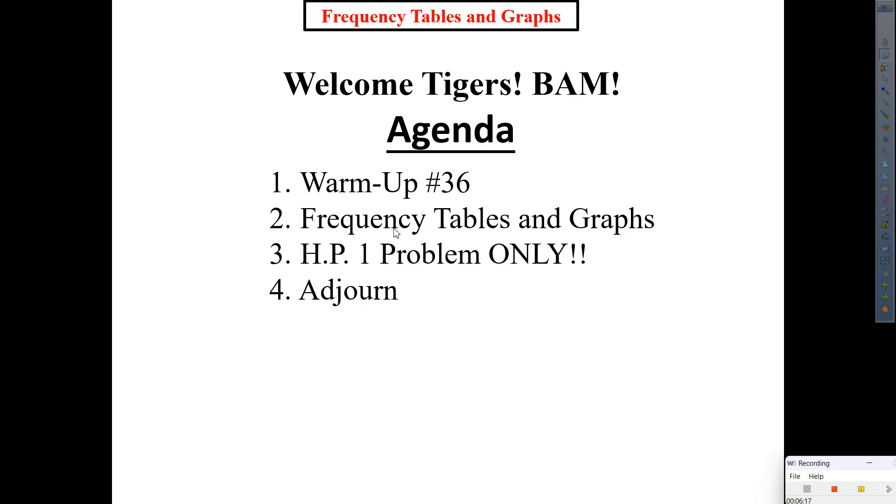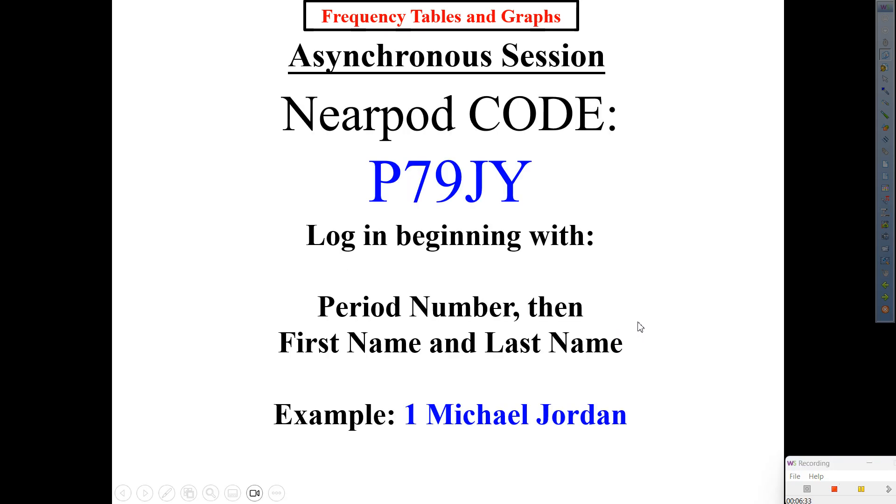So once again, warm-up 36 done. We're wrapping up frequency tables and graphs. And hopefully for tonight, one problem. So last night, we had three problems. But before you go there, here's a code for your access to the home plate. P-79-J-Y.